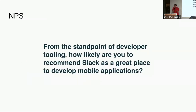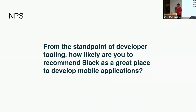We also experimented with NPS, asking from the standpoint of developer tooling: 'How likely are you to recommend Slack as a great place to develop mobile applications?' We did this for a couple of quarters, then got feedback from a research data person who said they don't really like NPS — the scale is confusing, it's a 10-point scale, and it's hard to reason about whether scores are good or bad. We kind of dropped the question on our latest survey, but I actually kind of miss it. I liked the NPS thing.